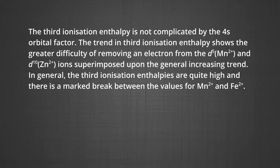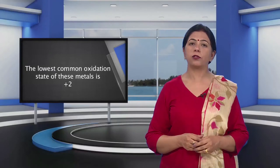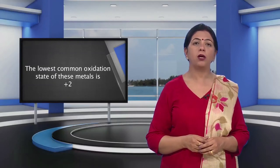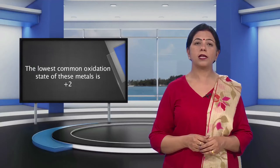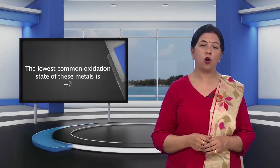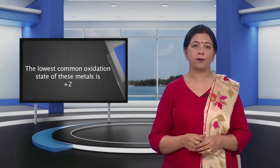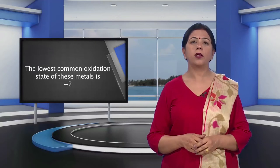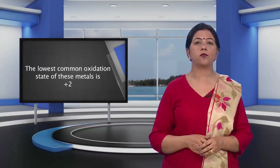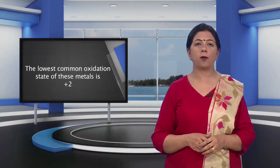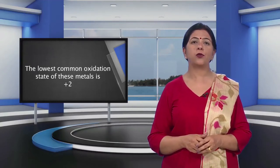In general, the third ionization enthalpies are quite high, and there is a marked break between the values for Mn2+ and Fe2+ ions. The high values of the third ionization enthalpy for copper, nickel, and zinc indicate why it is difficult to obtain an oxidation state greater than +2 for these elements. Although ionization enthalpies give some guidance concerning relative stabilities of oxidation states, the problem is complex and not amenable to ready generalization.